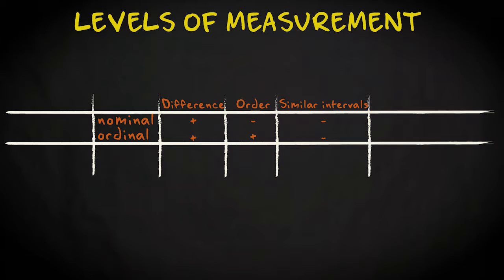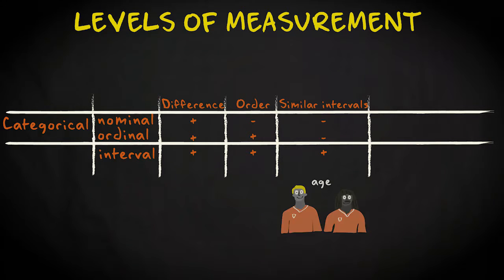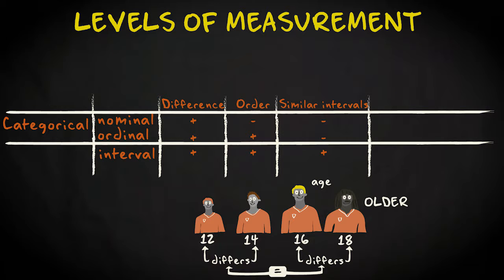Both nominal and ordinal levels can be called categorical variables. The next level of measurement is the interval level. With interval variables, we have different categories and an order, but also similar intervals between the categories. An example is the age of a football player. We can say that a player of 18 years old differs from a player of 16 years old in terms of age. In addition, we can say that this player is older. But we can also say that in terms of age, the difference between an 18 year old player and a 16 year old player is similar to the difference between a 14 year old player and a 12 year old player.